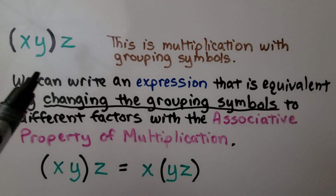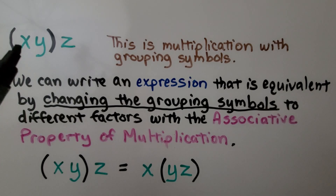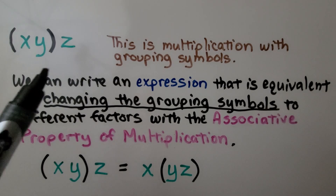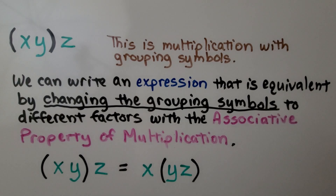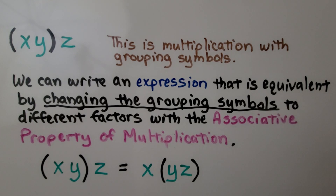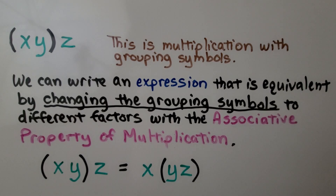Here we have x next to y in parentheses and a z on the outside. This is multiplication with grouping symbols. We can write an equivalent expression by changing the grouping symbols to different factors using the associative property of multiplication. We just put the parentheses around the y and the z, and we'll get the same product.